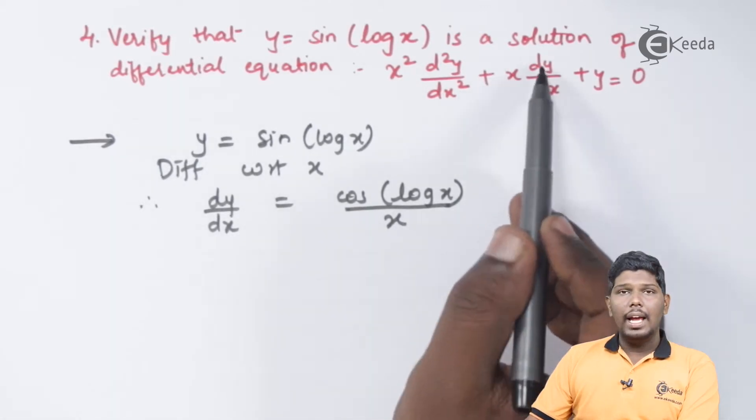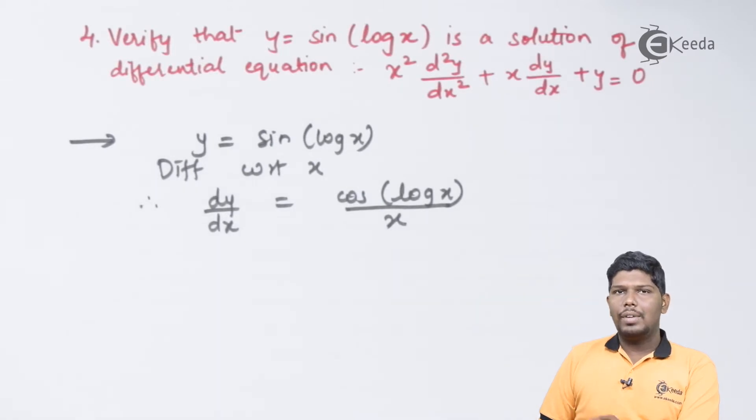As you can see, in the given result, we need x dy by dx. So, you can take this term on the left hand side.